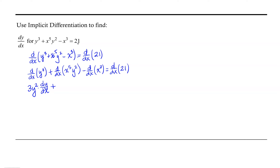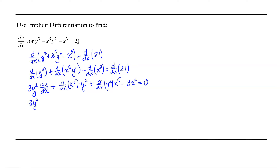Plus, now we're going to use the product rule for our second term. That means we have the derivative with respect to x of the first term times the second term, plus the derivative with respect to x of the second term times the first term, minus the derivative of x cubed — by the power rule, that's going to be 3x squared. The derivative of x to the fifth is 5x to the fourth by the power rule, times y squared.